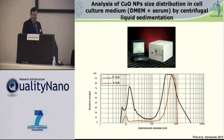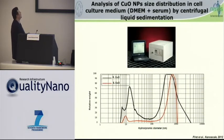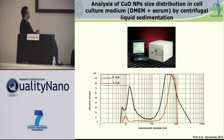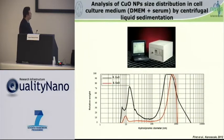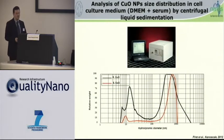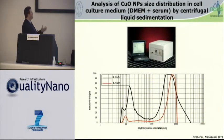We also characterized the size distribution of both nanoparticles after dilution into the cell culture medium by centrifugal liquid sedimentation. As you can see on this graph, we detect two peaks: one around 400 nanometers corresponding to agglomerated nanoparticles, and a second one around 10 nanometers corresponding to well-dispersed nanoparticles. Interestingly, the size distribution for both nanoparticles is very similar.